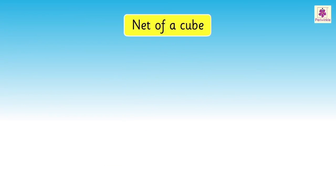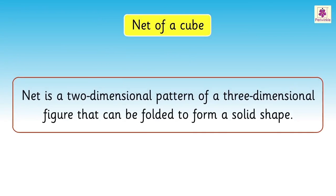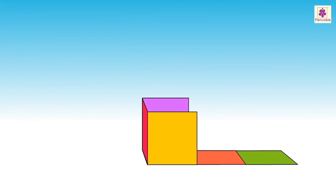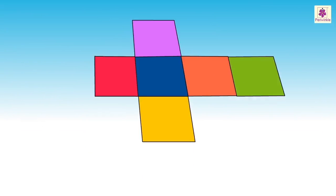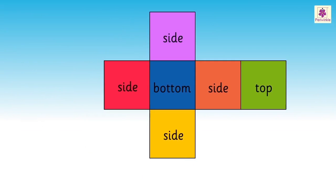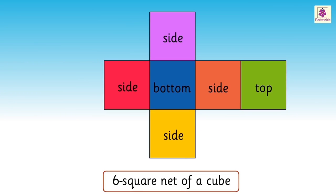Net of a cube. Net is a two-dimensional pattern of a three-dimensional figure that can be folded to form a solid shape. When we open a cube, it will appear flat with six squares of equal size as shown. This is a six-square net of a cube.